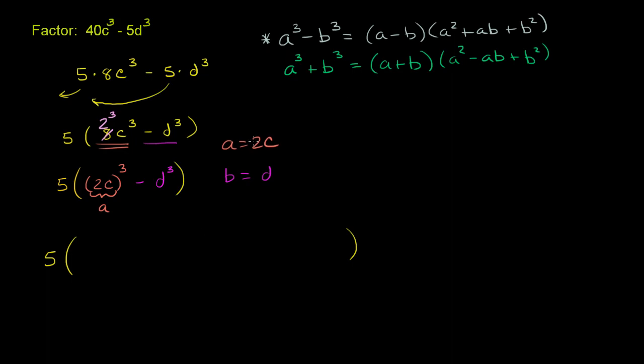So a is 2c. 2c minus b, which is d. So it factors out as the difference of the two things that I'm taking the cube of.